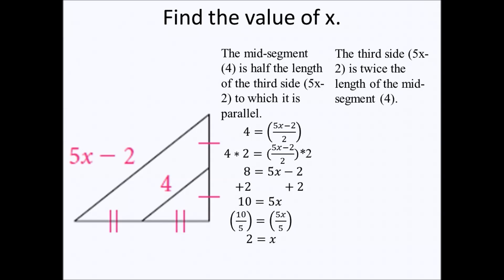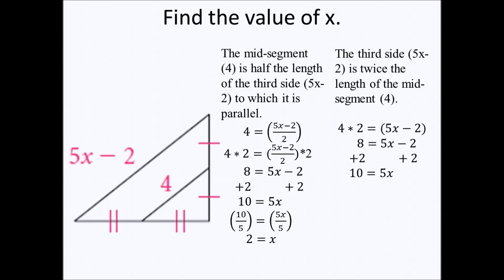The second approach is that the third side 5X minus 2 is twice the length of the mid-segment 4, so the equation is 4 times 2 equals 5X minus 2. Simplifying, 8 equals 5X minus 2. Adding 2 to both sides gives 10 equals 5X. Dividing both sides by five: 10 divided by 5 is 2, and 5X divided by 5 is X. Therefore, X equals 2.